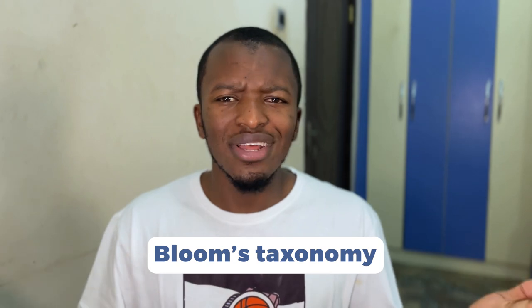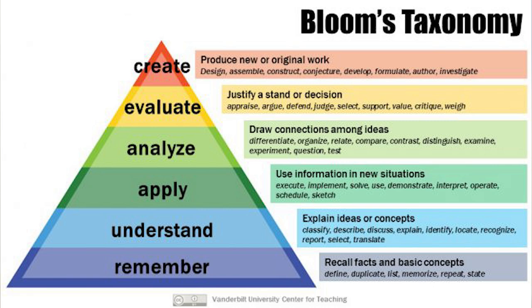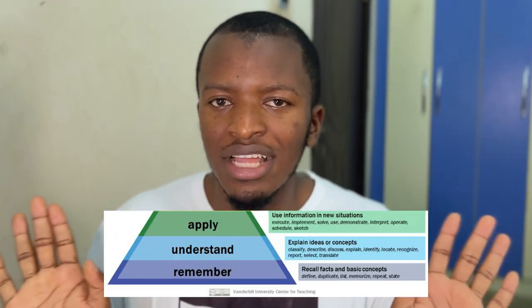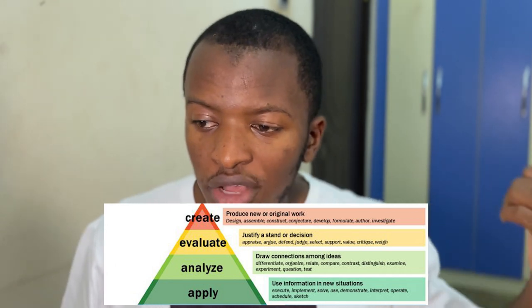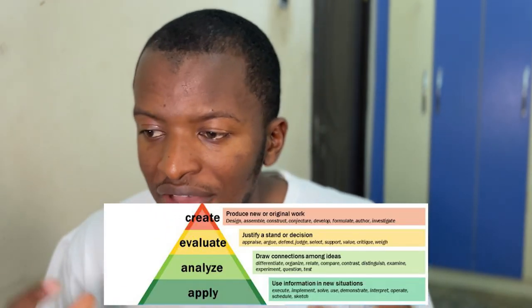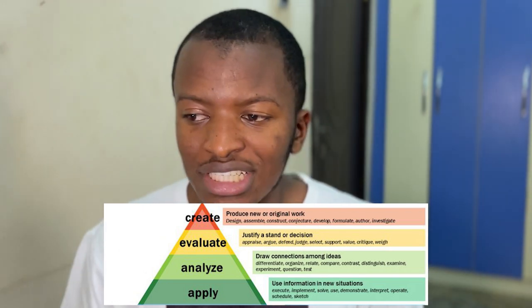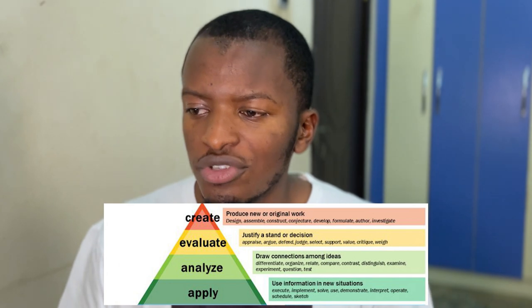This leads me to the next tip: using Bloom's Taxonomy when you're studying. Bloom's Taxonomy is a framework with six levels of learning, from lower-order to higher-order learning. Lower-order learning involves just remembering or understanding something — you can define it, list the types, or state what it means. Higher-order learning is where you can draw connections among ideas, evaluate arguments, defend positions, and judge conclusions.